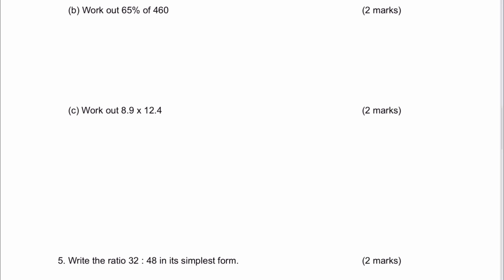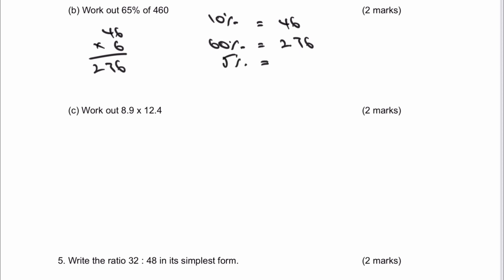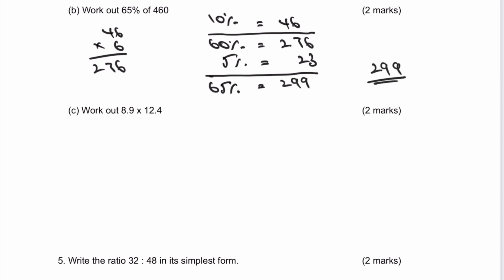Part B: 65% of 460. I know 10% equals 46. For 60%, I multiply 46 by 6 to get 276. For 5%, I halve the 10%, giving 23. Adding 276 and 23 together gives 299, which is the answer to part B.